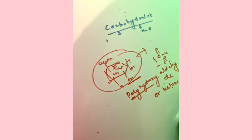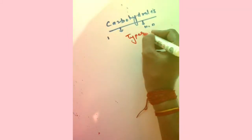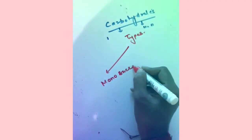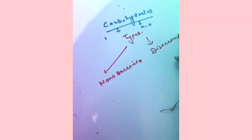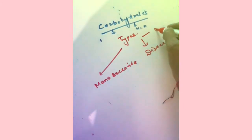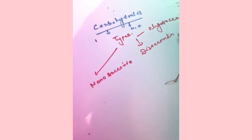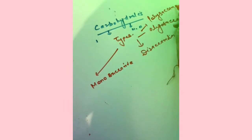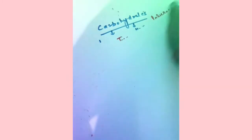Carbohydrates are sweetest in taste. Now we will talk about the types of carbohydrates. There are four types: monosaccharides, disaccharides, oligosaccharides, and polysaccharides.